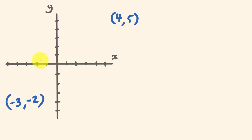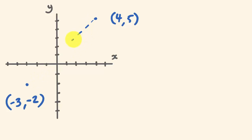So minus 3, minus 2 is just here. And 4, 5 — so 1, 2, 3, 4, and up 5 — is going to be just here. So if I was to draw a line in between these, I'll draw a line in between these.